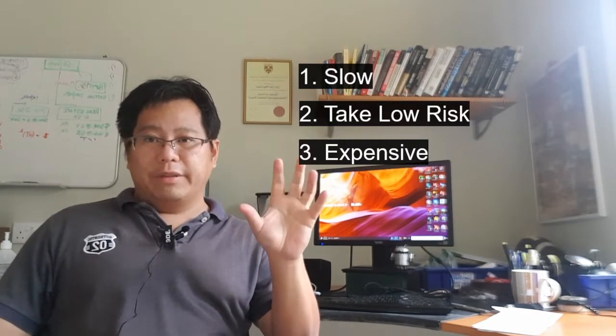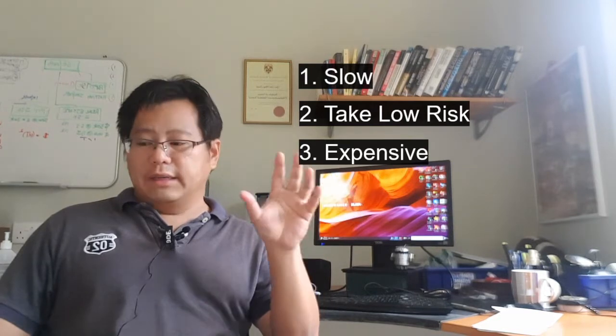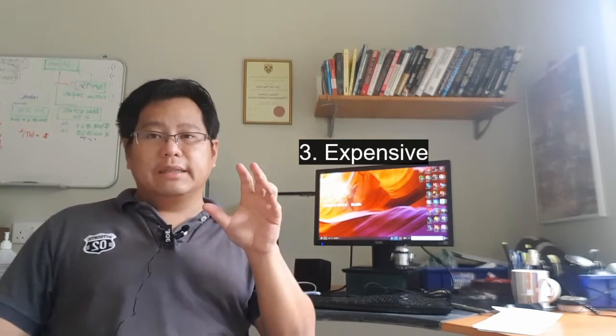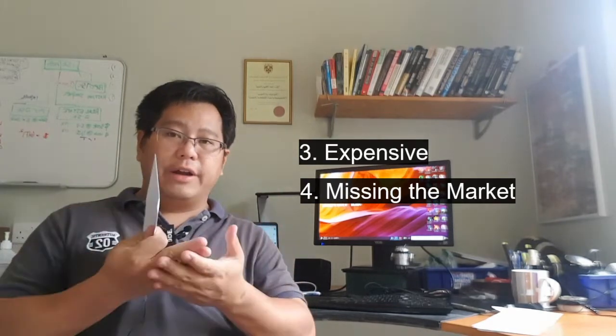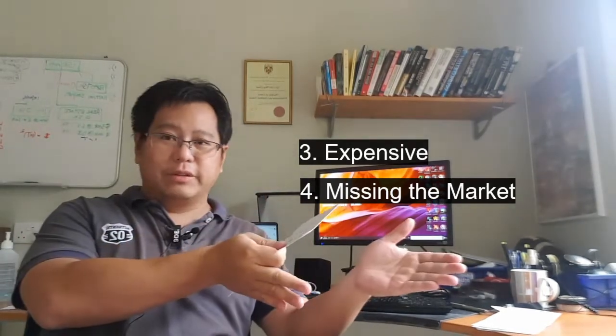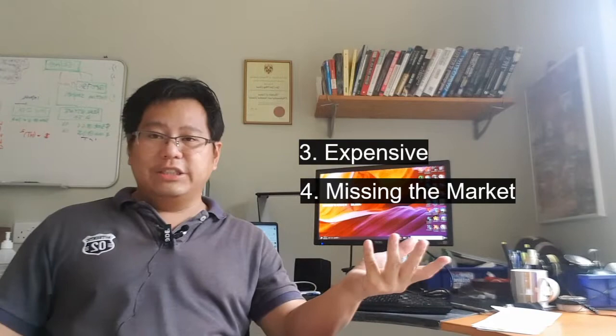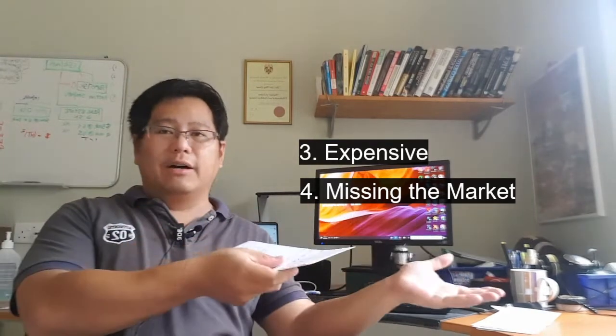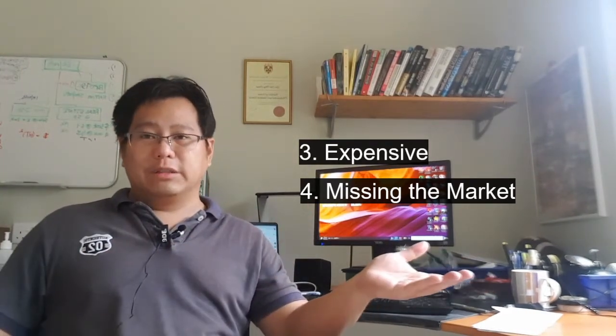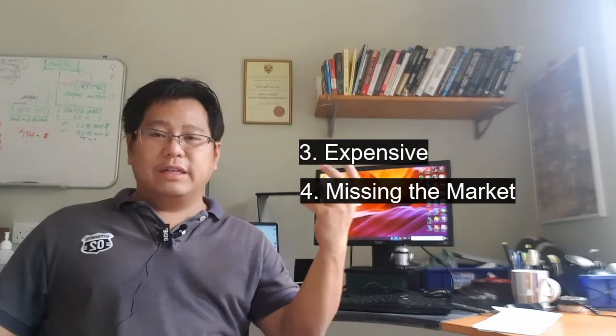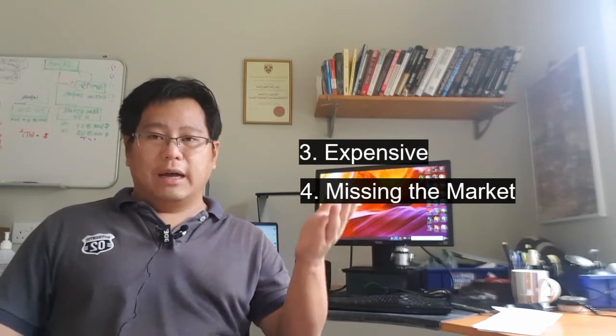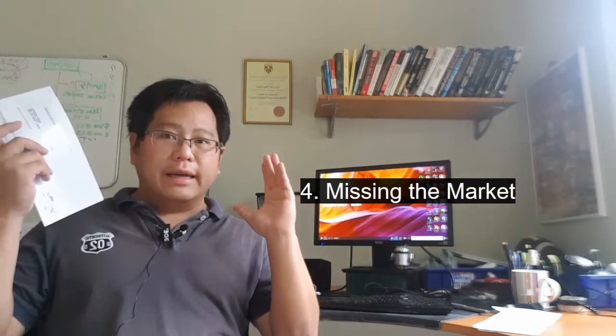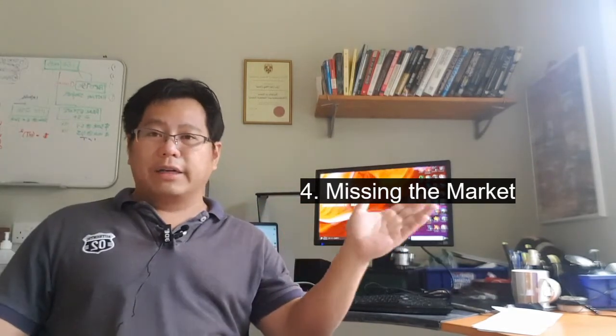The final part, two major things that are very interesting about this. The final part is missing the market. So what happens is two areas. One, it takes so long to get your process out that the market has changed. You wanted green. Now, when you deliver green, the market wants blue. Very unique problem to TQM. Missing the market.